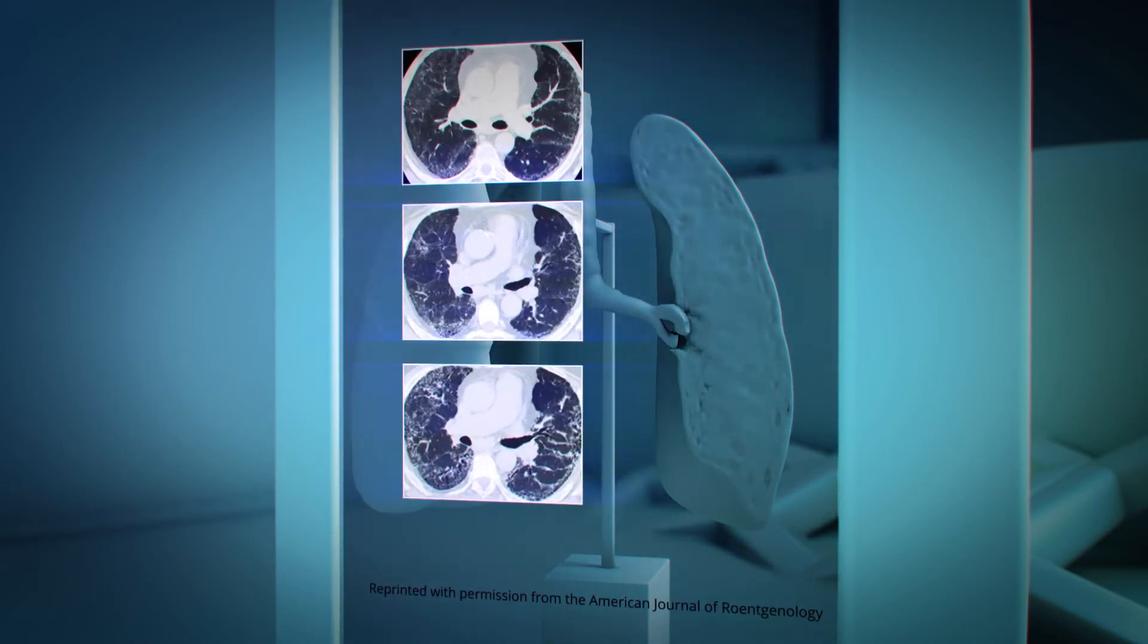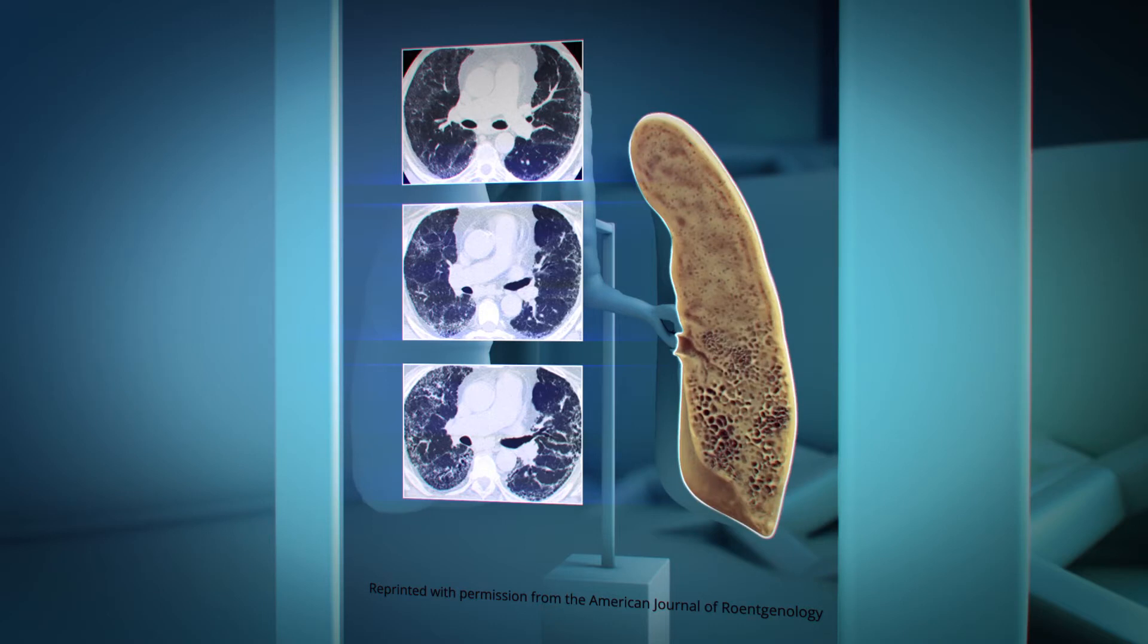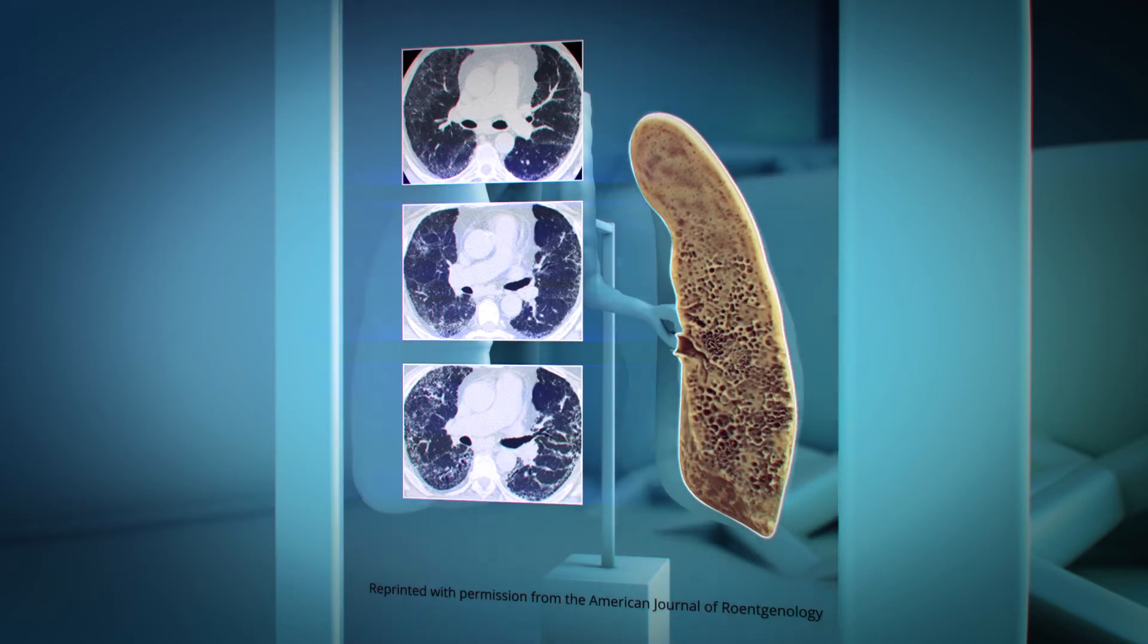Though chest radiographs occasionally show limited signs of IPF in patients with the disease, reticular opacities with a subpleural basilar predominance and traction bronchiectasis are identified with HRCT. As you can see here, opacities, while subtle at first, progress to form the hallmark honeycomb abnormalities in patients with IPF.